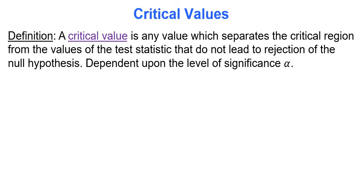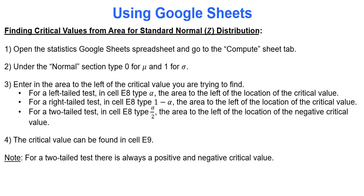Now let's talk about critical values. One way to run a hypothesis test is to calculate the test statistic, find the p-value, and compare it to alpha — that's the p-value approach. But there's also a critical value approach. A critical value is any value which separates the critical region from the values of the test statistic that do not lead to rejection of the null hypothesis; it depends on the level of significance alpha. In Google Sheets, we use the area-to-the-left portion of the normal region to find a critical value along the x-axis.